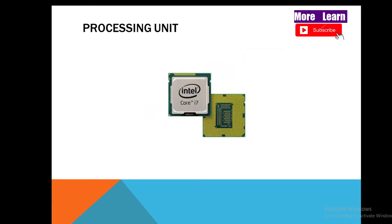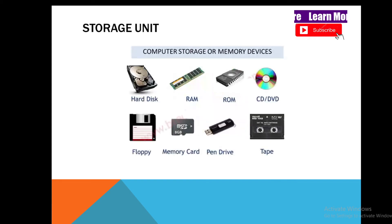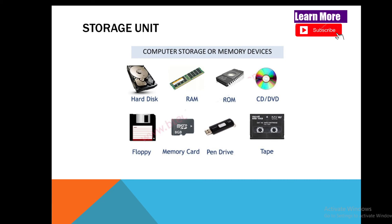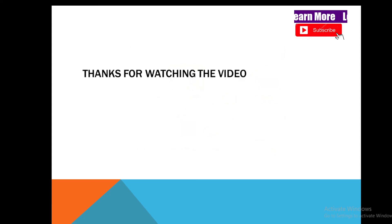The processing unit, CPU, is also hardware because we can physically touch it. Storage units are also hardware — examples include hard disk, RAM, ROM, CD drive, memory card, pen drive, and tape.